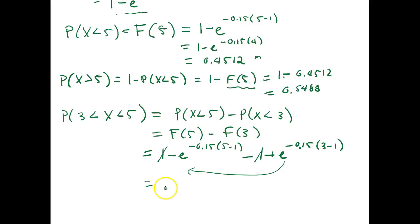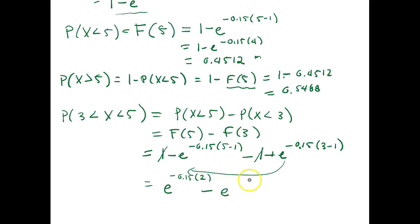This leaves us with a positive e to the negative 0.15 times 2 (since 3 minus 1 is 2), minus e to the negative 0.15 times 4.